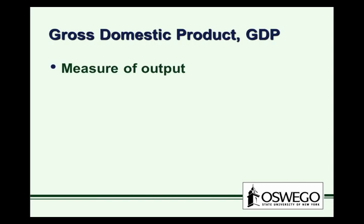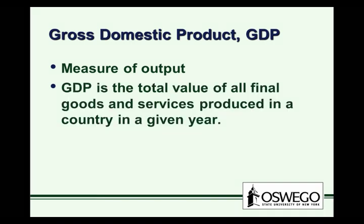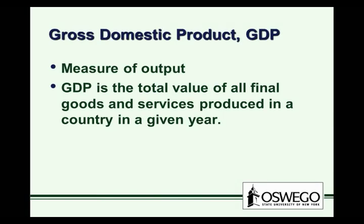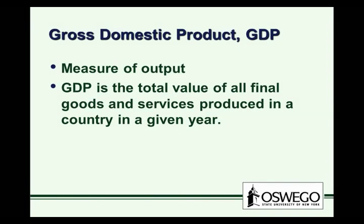The gross domestic product is a measure of output, and this measure of output is really used to compare economies across all different nations, or within a nation over time. Specifically, GDP is the total value of all final goods and services produced in a country in a given year. That's a mouthful, so let's take this definition apart and see what's involved.